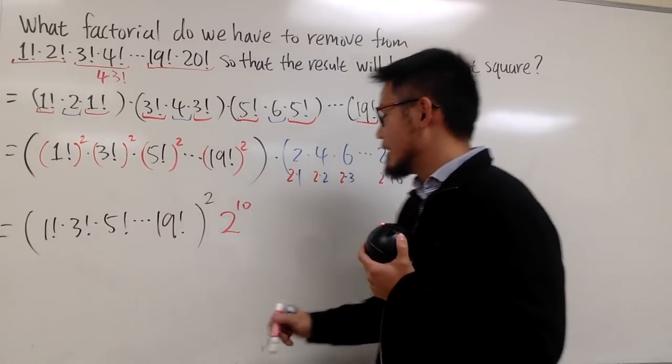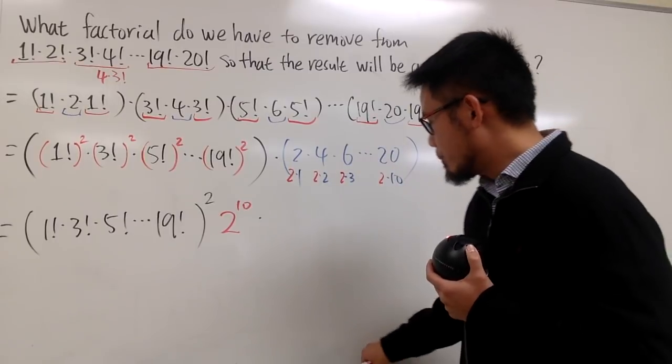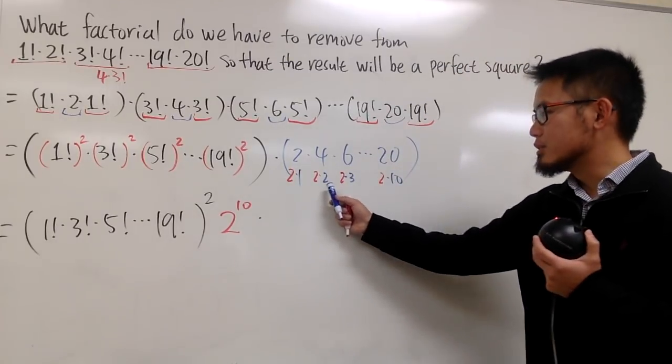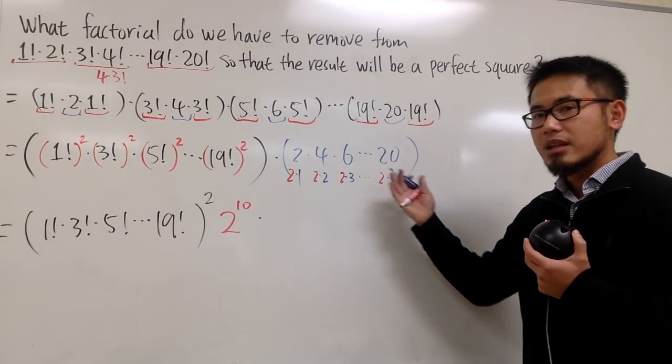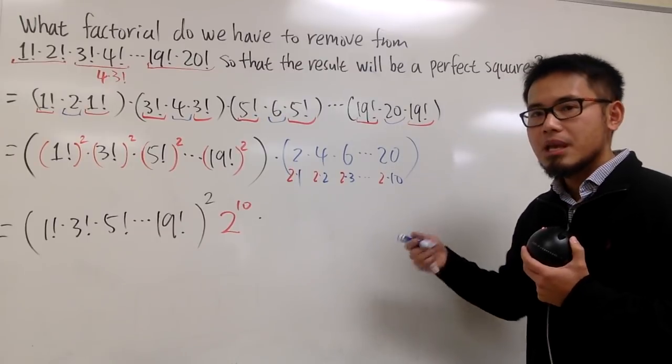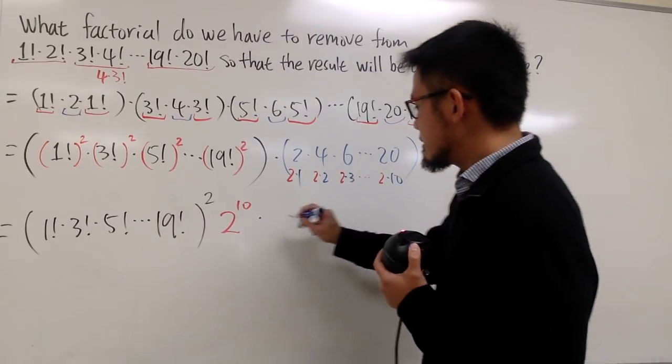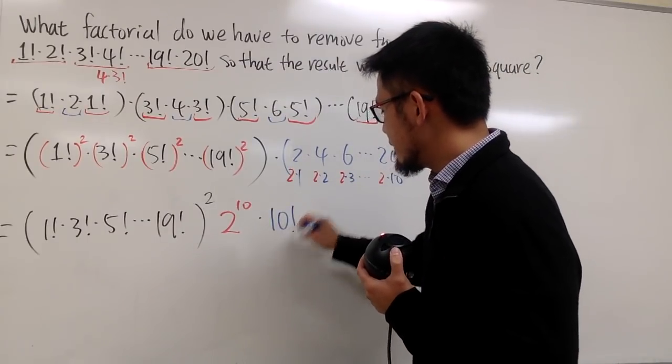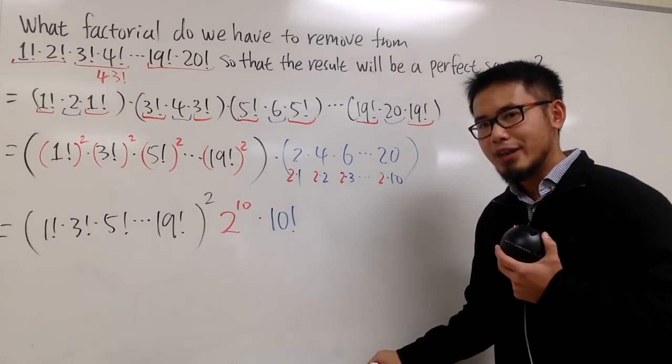And finally, we see that the blue part is 1 × 2 × 3 × 4 × ... up to 10. In another word, it is going to be 10!. And now, which of this factor right here is not invited in the perfect square world?